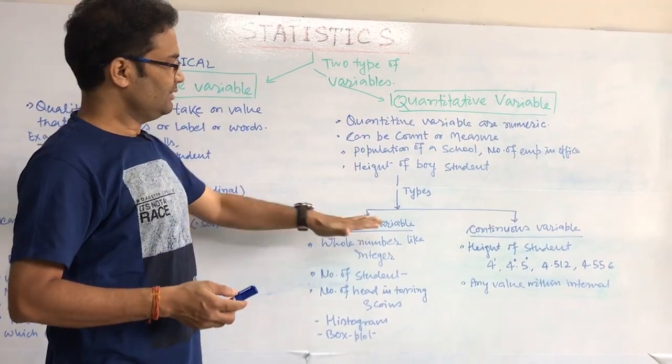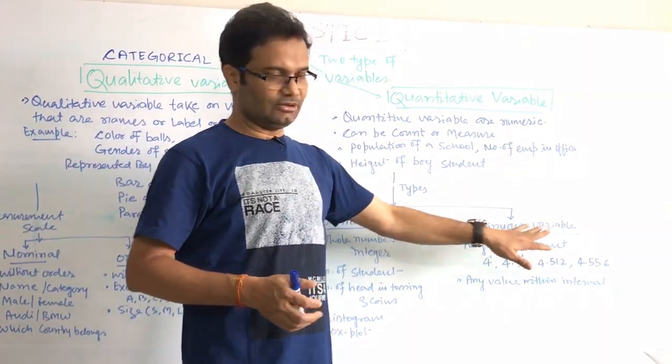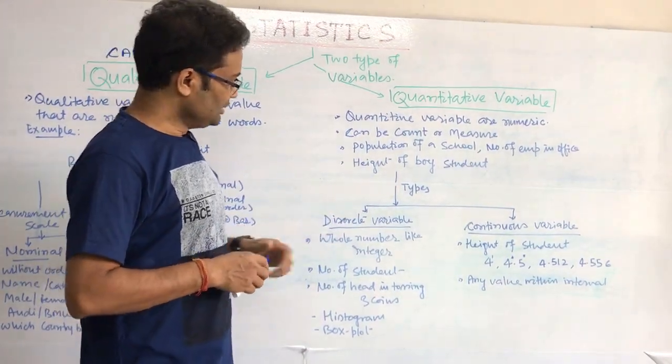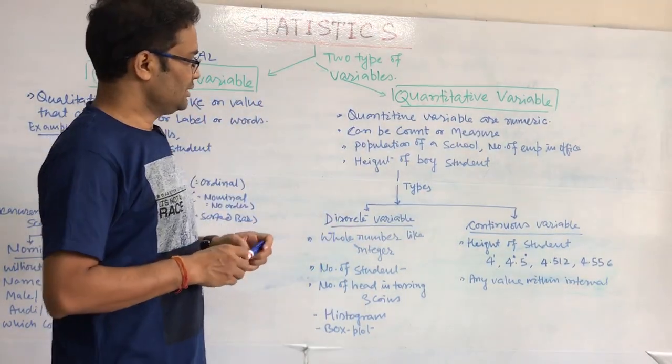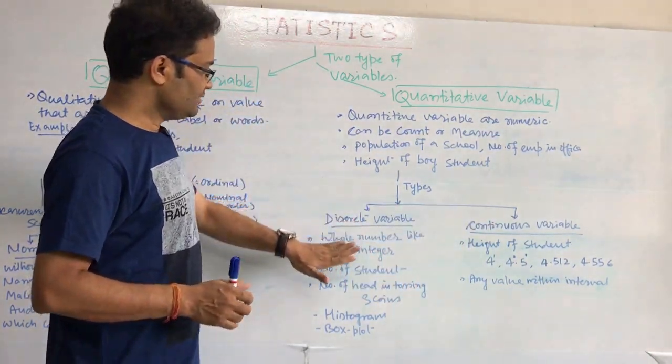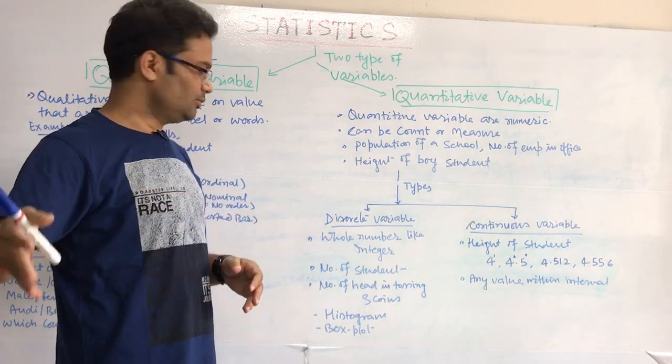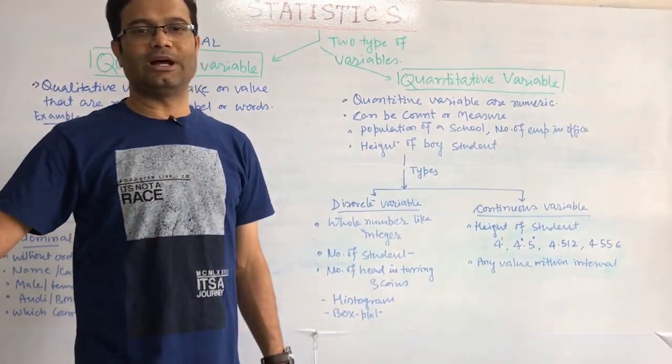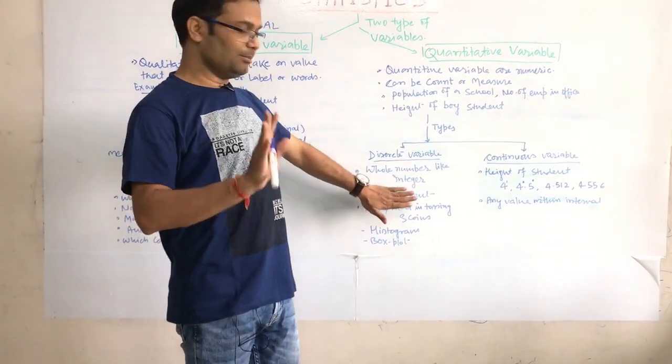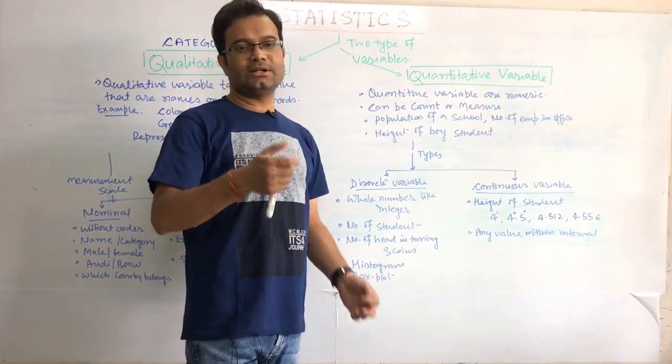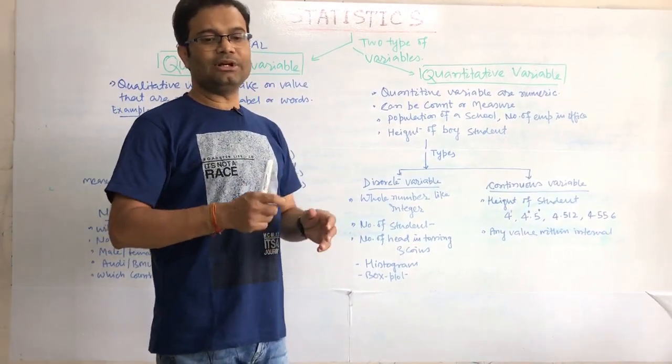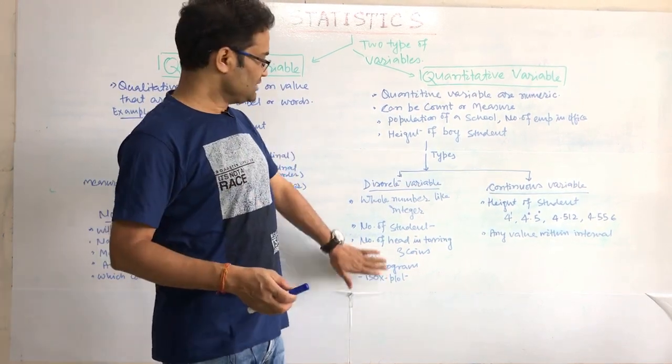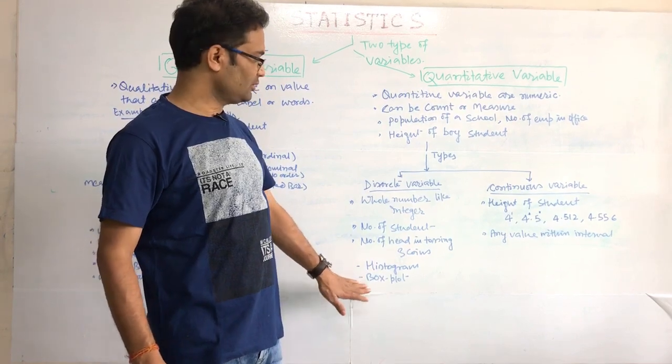Further quantitative, I differentiate into two parts. One is discrete variable, second is continuous variable. These both are very important terminologies because when you study permutation, combination or probability, then this term is very important. Discrete whole number, like the integer 1, 2, 3, 4, 5, 6. Number of students in school, that is always 1, 2, 3, 4. We cannot say 4.5 students or 7.8 students. We come into a number. If I toss 3 coins and I want to say how many heads appear, either it be 1 head, 2 heads or 0 heads, or 3 heads. It could not be 2.5 heads. This is called discrete variables. We use histogram and box plot for discrete kind of data.